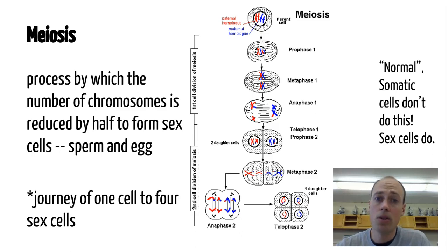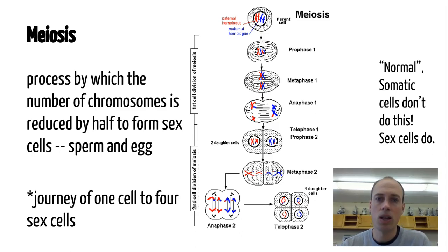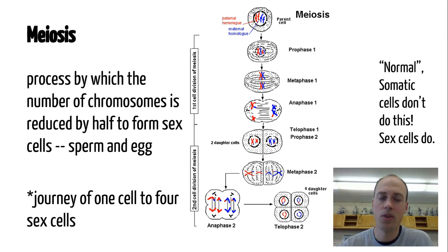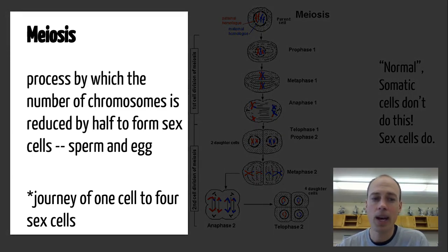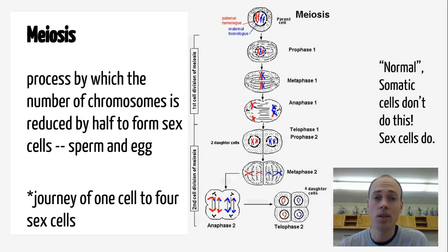The process is called meiosis. You've learned about mitosis — that's the simple process where DNA is doubled, it splits apart, and you have two identical cells that came from one. It's how our body grows and repairs itself. Meiosis only happens with sex cells, for the production of sex cells like sperm and egg. Meiosis is a process by which the number of chromosomes is reduced by half to form the sex cells — the sperm and the egg — which when fertilized, will get back to the normal number of chromosomes.